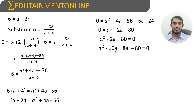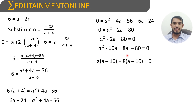We resolve this by splitting the middle term minus 2a into minus 10a plus 8a, since 10 times 8 is 80, which equals the product of the coefficients of the first and last terms (1 times 80). Taking a as common from the first two terms and 8 as common from the last two terms gives a into a minus 10 plus 8 into a minus 10 equals 0, so a minus 10 into a plus 8 equals 0.